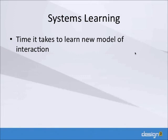Systems learning is the time it takes a learner to learn a new model of interaction. With traditional education, like in high school, students are pretty comfortable with how learning works — they sit at a desk, go from class to class, listen to the teacher, and do homework. But when using an e-learning platform, they have to figure out how to use the software, how to log in, and how to interact with the information coming at them.